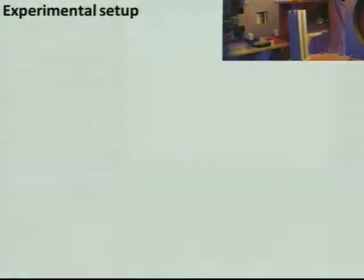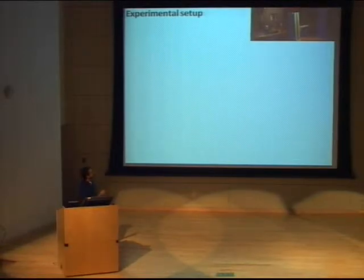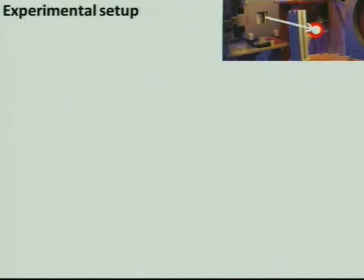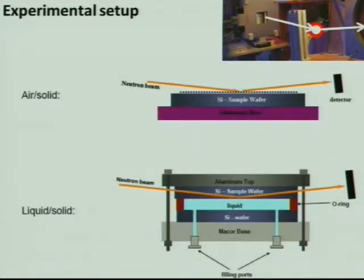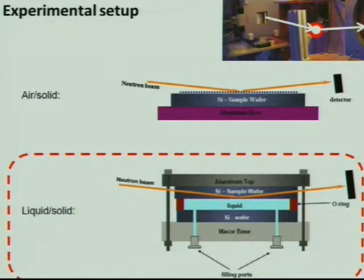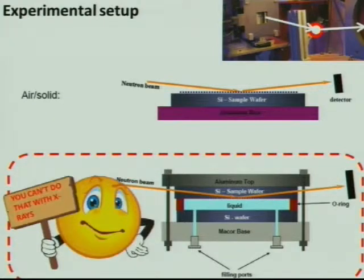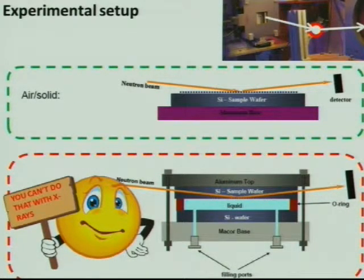After all the optics — the choppers, mirrors, and collimators — we place our sample on a motorized stage for alignment and accurate positioning. The incident neutron beam hits the sample and bounces off to a detector. There are two main configurations: one is air-solid, where neutrons come from the air and probe the air-solid interface. The other is liquid-solid, which is a unique feature of neutron beams — you cannot do this with X-rays. The neutron beam can penetrate through a solid, such as single crystal silicon, and probe the interface between the solid and a liquid.